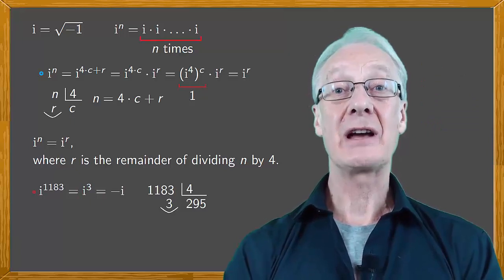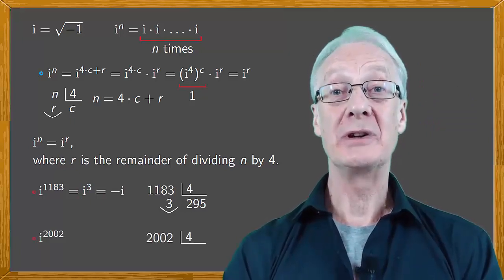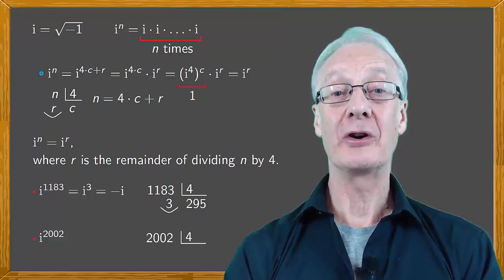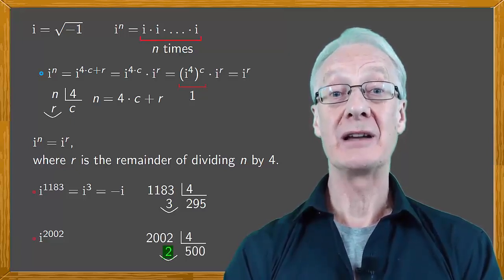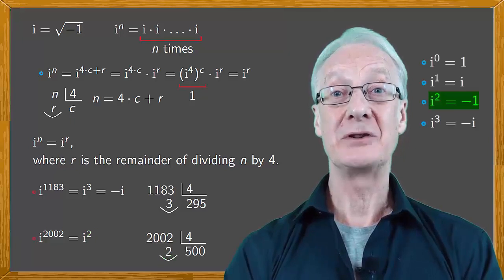Again, to calculate i to the 2002, we divide 2002 by four, giving a remainder of two. So our calculation simplifies to i squared, which is minus one.